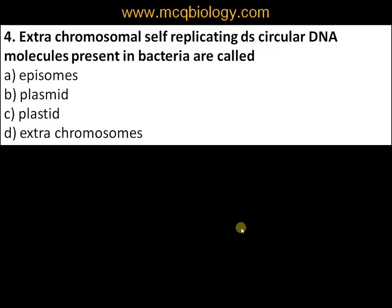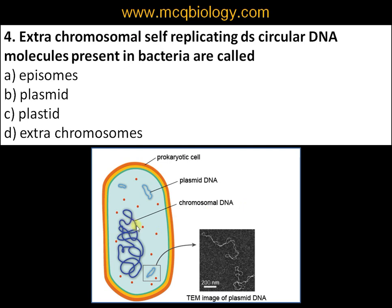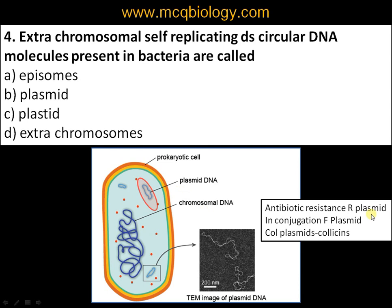Question number four: extra-chromosomal self-replicating double-stranded circular DNA molecules present in bacteria are called: A) episomes, B) plasmid, C) plastid, D) extra chromosomes. Apart from the main genetic material, bacteria have self-replicating circular DNA called plasmids. Some are R plasmids providing antibiotic resistance, some are fertility plasmids involved in conjugation, and some produce bacterial toxins like colicins that inhibit growth of other strains.